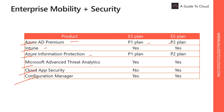Azure Information Protection encrypts documents and enforces policies on how they can be used. Documents and data are more protected because only authorized users can access this content. Microsoft Advanced Threat Analytics can detect suspicious activity and malicious attacks, and it can adapt to the changing nature of cybersecurity threats, providing focus and clarity with a simple attack timeline.